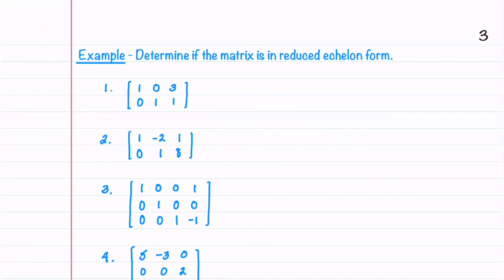Let's now look at another example where we're given four matrices and need to determine if each is in reduced echelon form. We'll begin with the first matrix. It doesn't have any row of zeros, so we'll begin by circling the leading entries. The leading entries are down and to the right. There are zeros below and above the leading entries, and the leading entries are equal to one. Because of this, this matrix is in reduced echelon form.